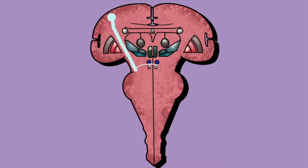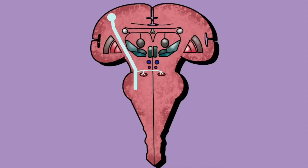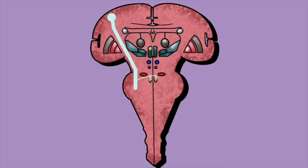The next nucleus down is the trochlear, which is also bilaterally innervated. Its nucleus is in the midbrain, slightly inferior at the level of the inferior colliculus. Entering the pons, we have bilateral innervation to the motor nucleus of the trigeminal nerve. Still within the pons, the abducens nucleus is also bilaterally innervated.